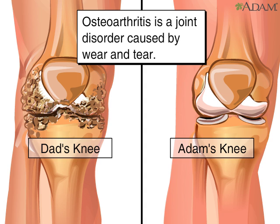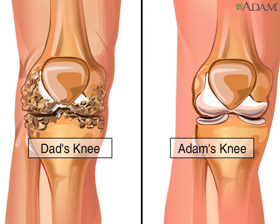Osteoarthritis is a chronic disease — a disease that persists for a long time. It causes the deterioration of the cartilage within a joint. For most people, the cause of osteoarthritis is unknown, but metabolic, genetic, chemical, and mechanical factors play a role in its development.